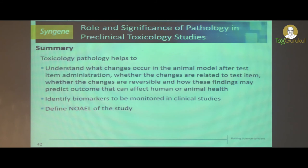In summary, toxicology pathology helps to understand what changes occur in the test system when you administer a compound, whether the findings are test item-related, and whether the findings are really adverse to the preclinical species. It also helps predict the outcome of human or animal health when extrapolating the data, and informs what biomarkers should be monitored in clinical trials. If you see elevation of liver biomarkers in preclinical studies, you can monitor those markers in clinical trials to see whether the drug is causing any adverse effect.